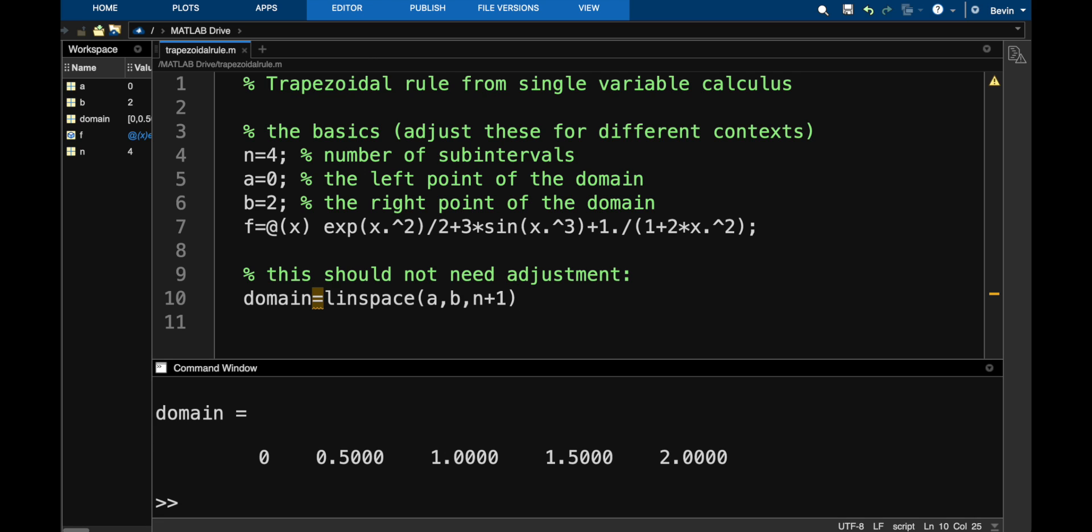Each of those points will get plugged into our function. We also need to know the width of all of these sub intervals. For that, I can just do the second entry in this vector minus the first entry because they all have the same size. So next, I'll call it dx like delta x. This is going to be the second entry in the domain vector minus the first entry.